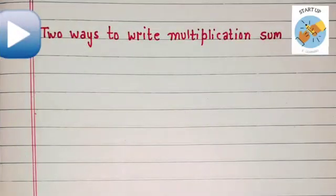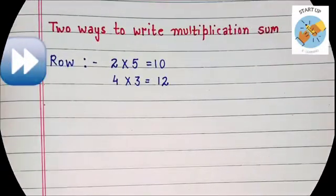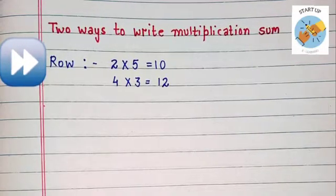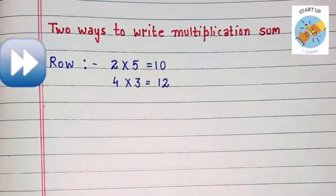Kids, there are two ways to write a multiplication sum. We can write it in row or we can write it in column. Children, row means line. Let us see how we can write a multiplication sum in a row.